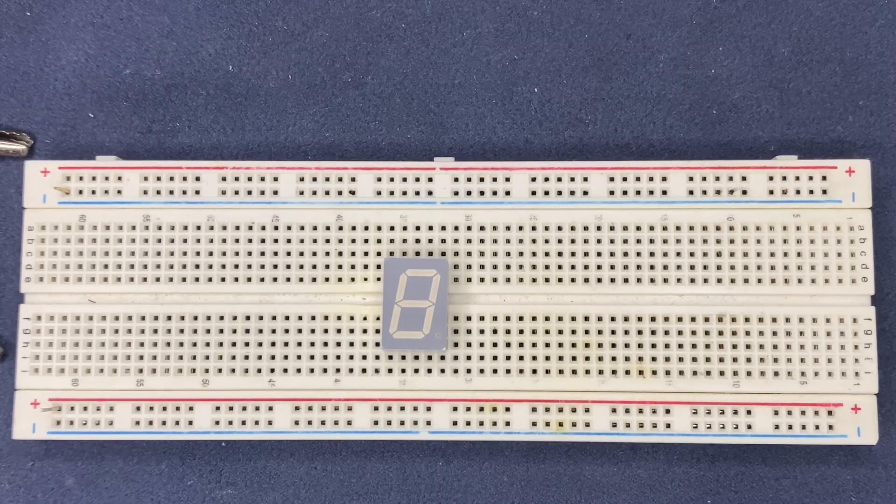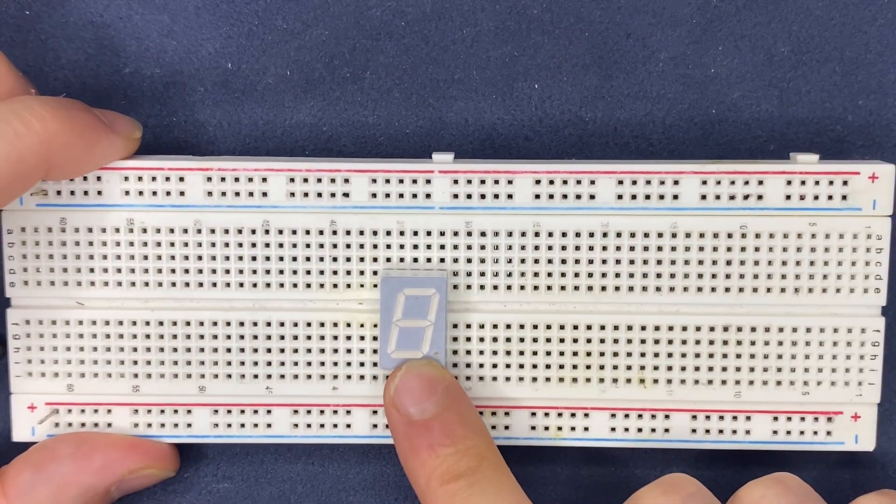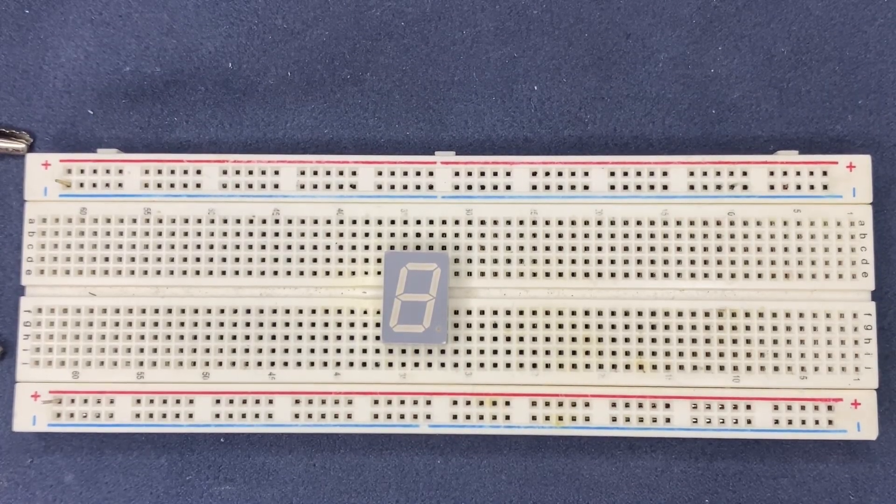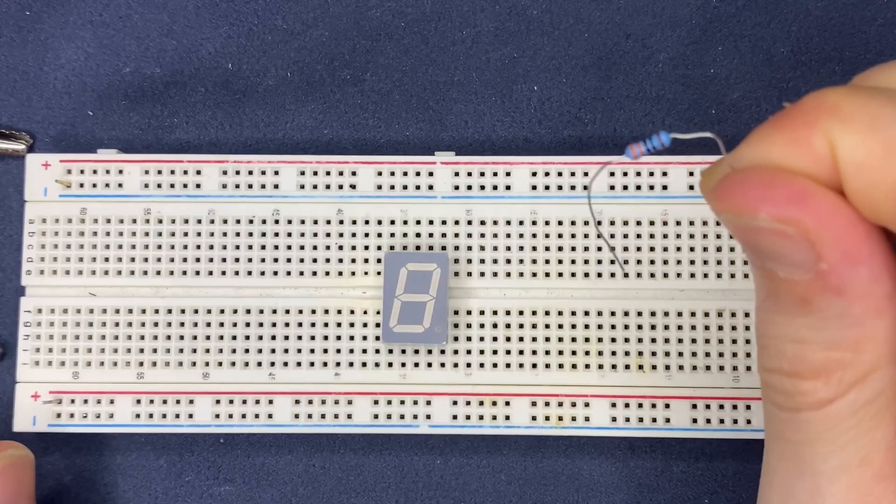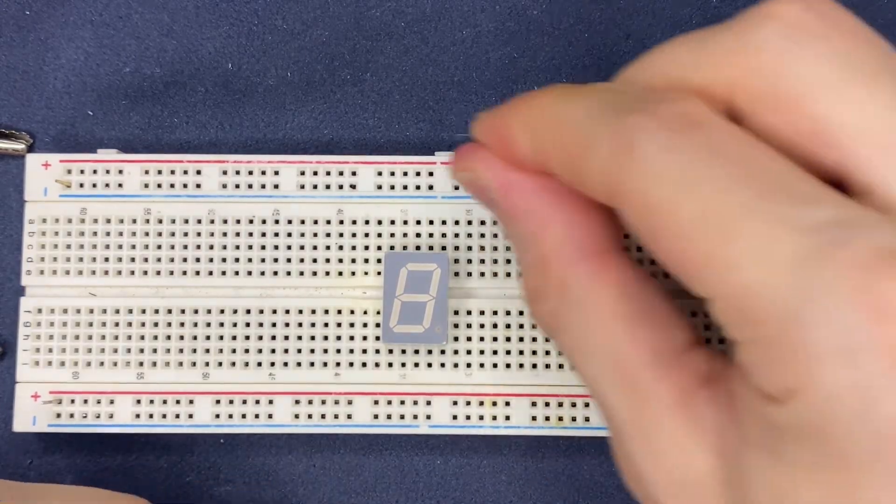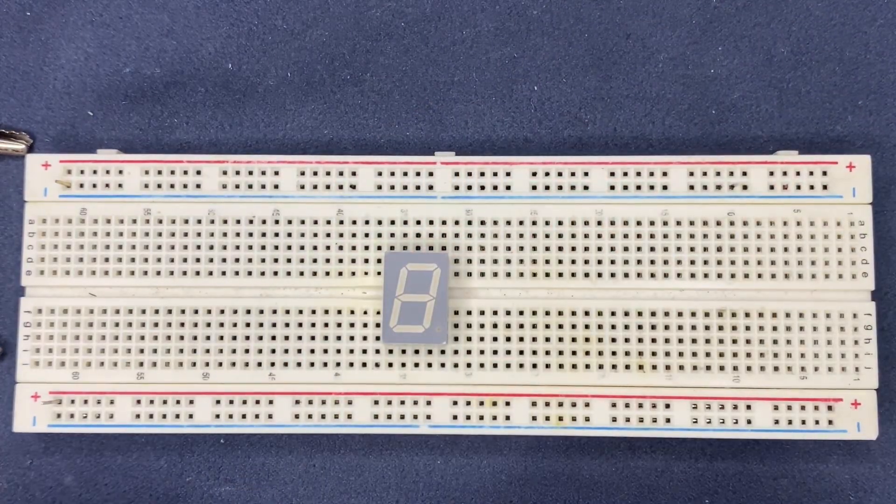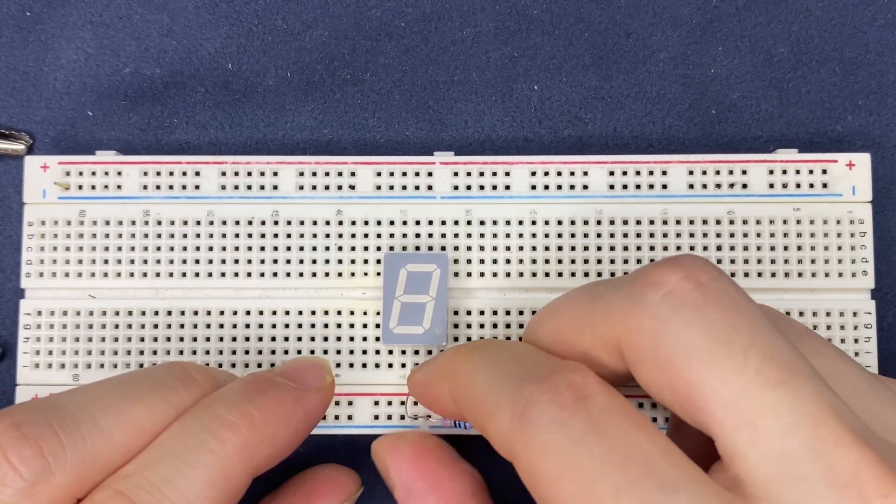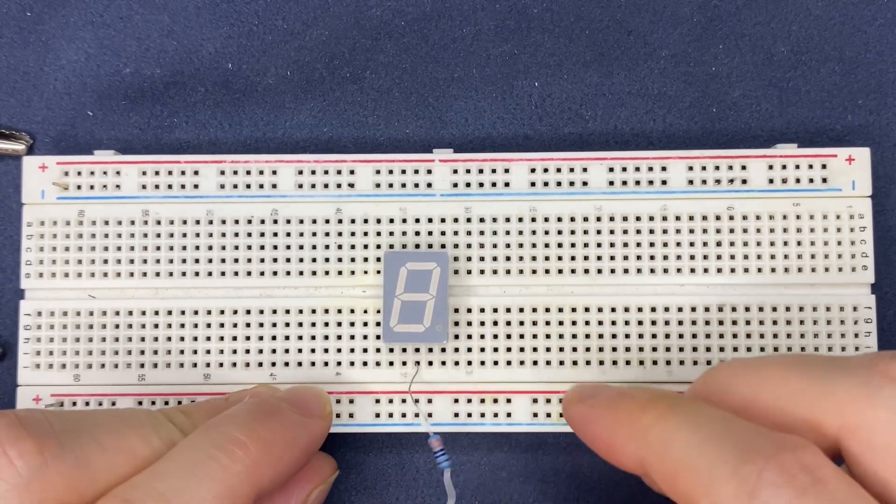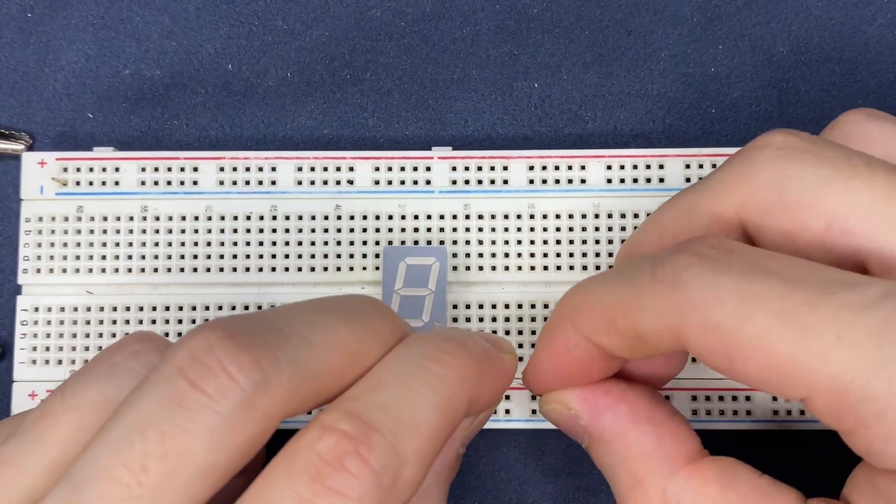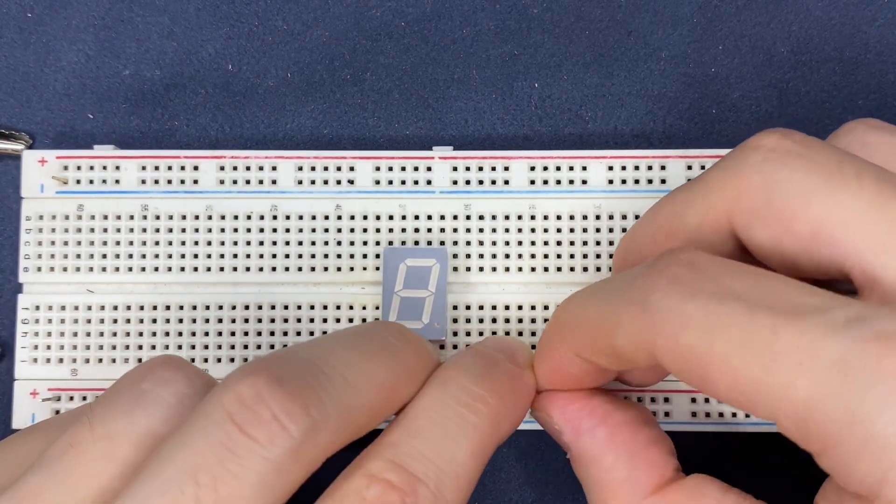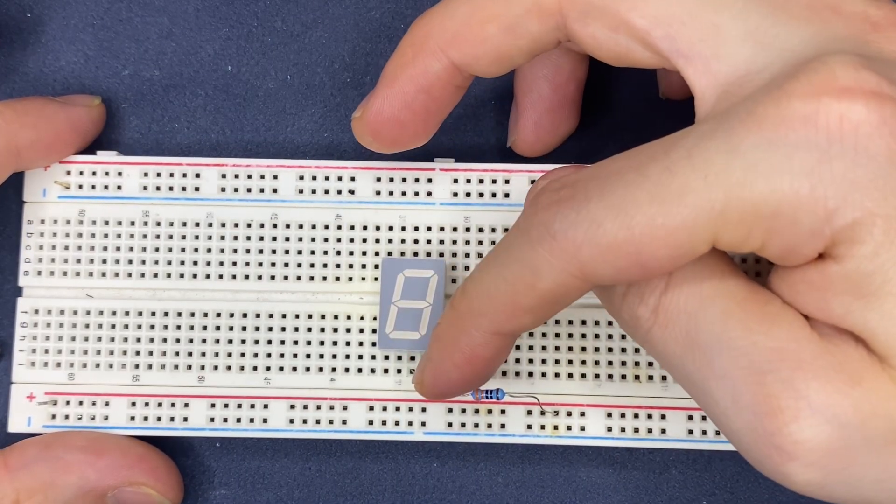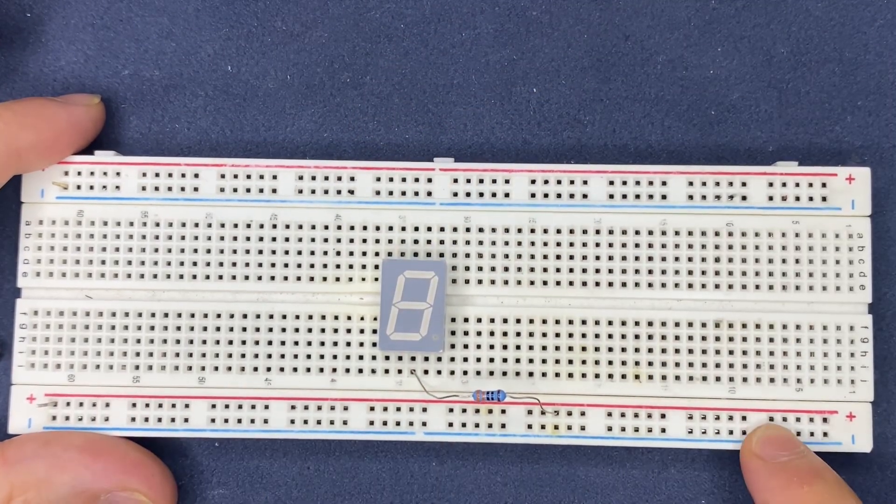So for the beginning, we have a 7-segment display. I'm not sure whether it is common anode or cathode. Let's connect a 220 ohm resistor to limit the current across the display. I'm going to connect it to pin 3, which is the common pin, and we hope that the 7-segment display is common anode. Therefore I'm going to connect pin 3 to the positive rail of the breadboard.